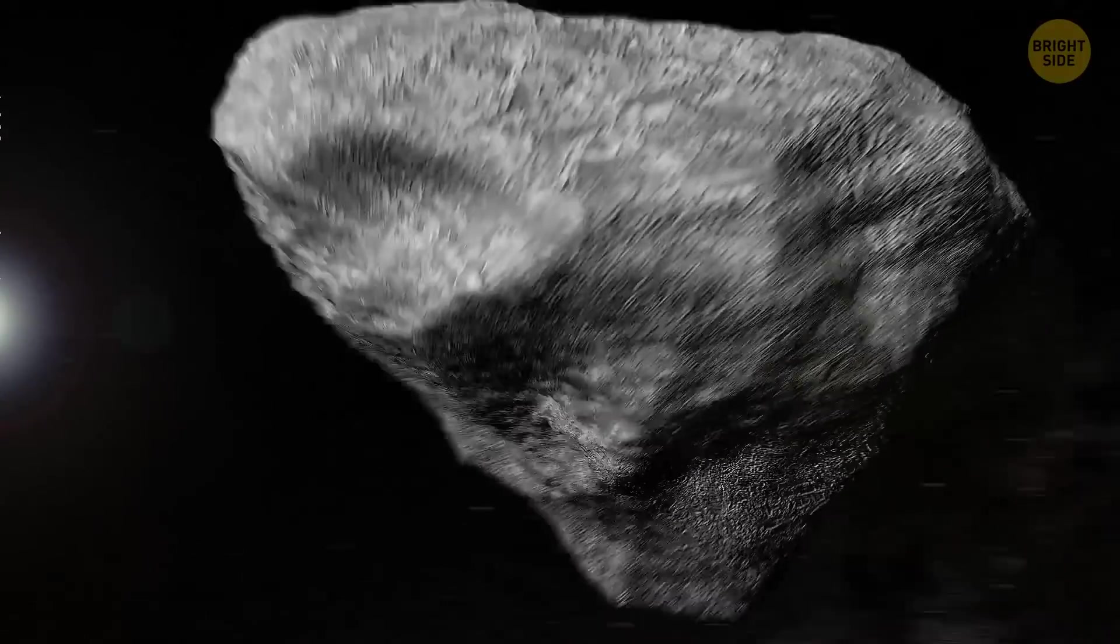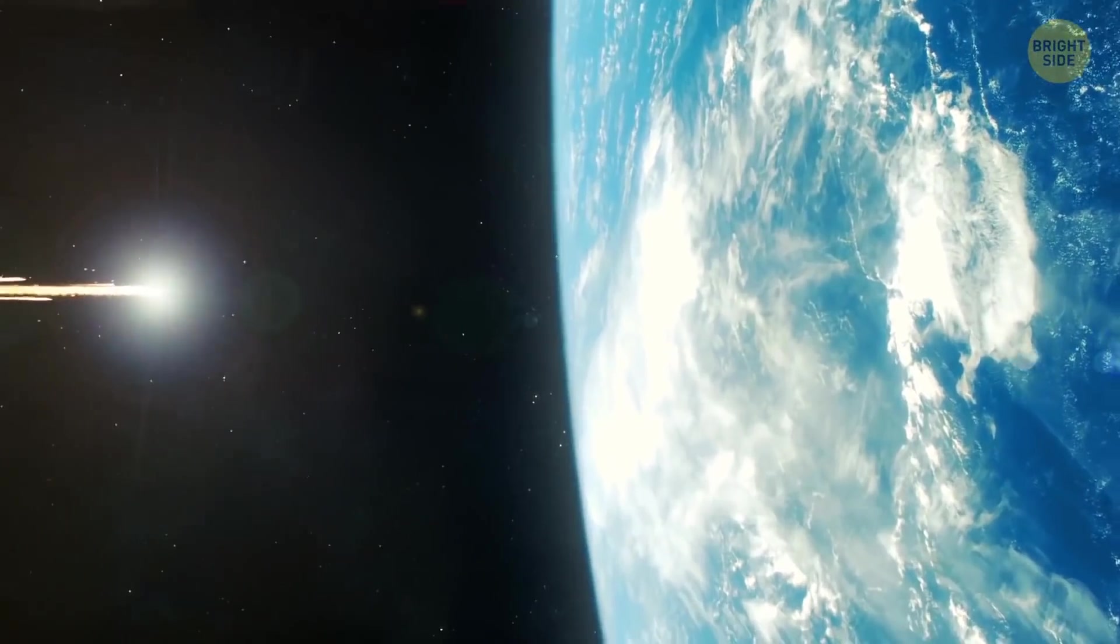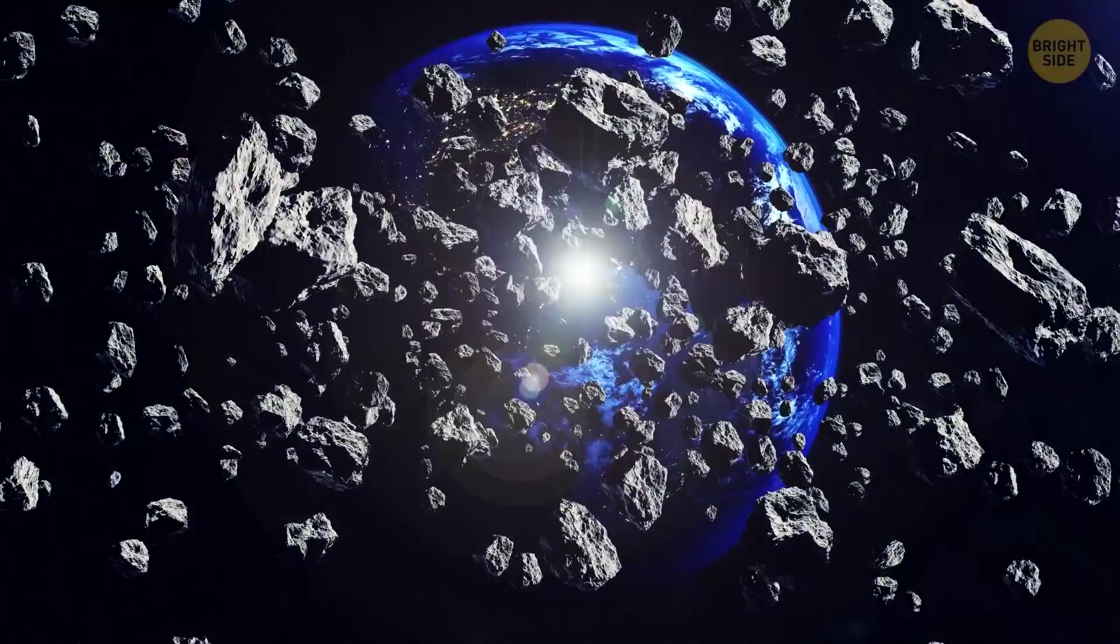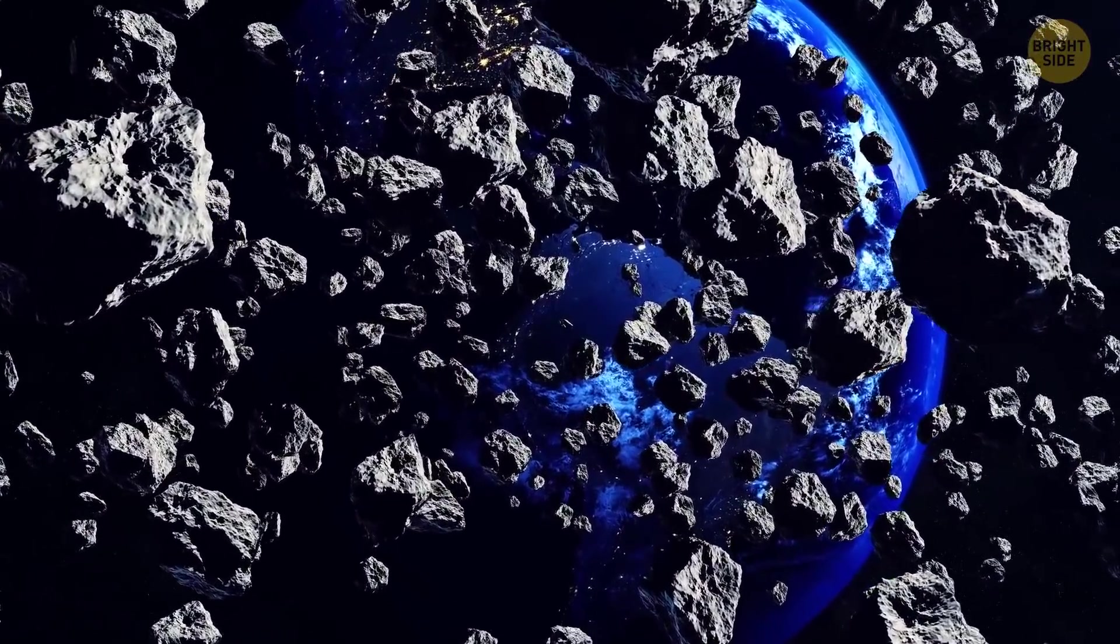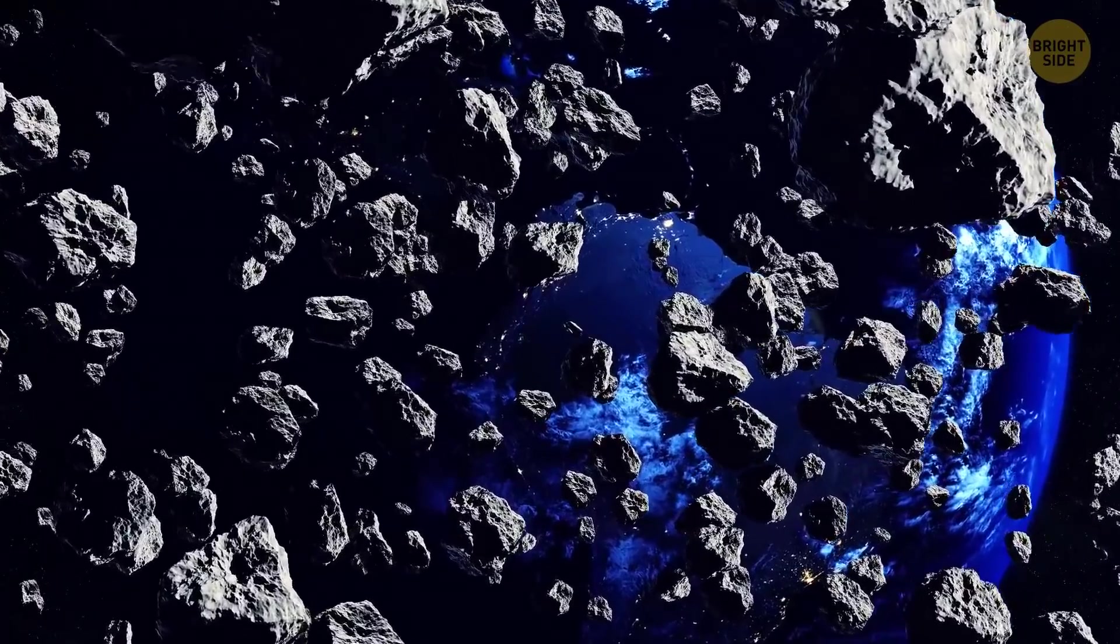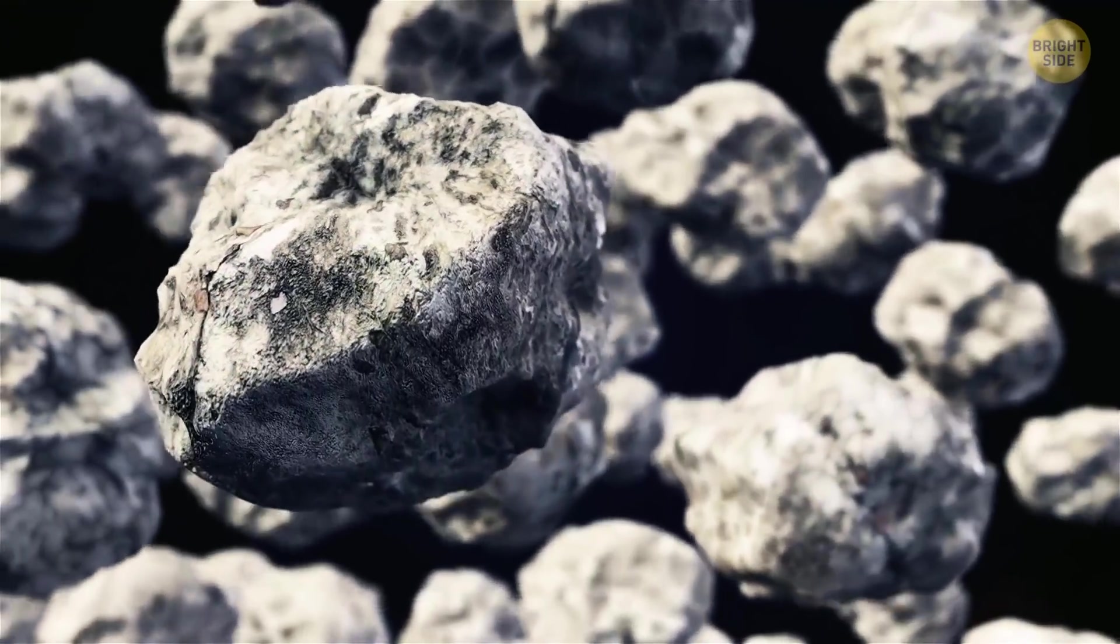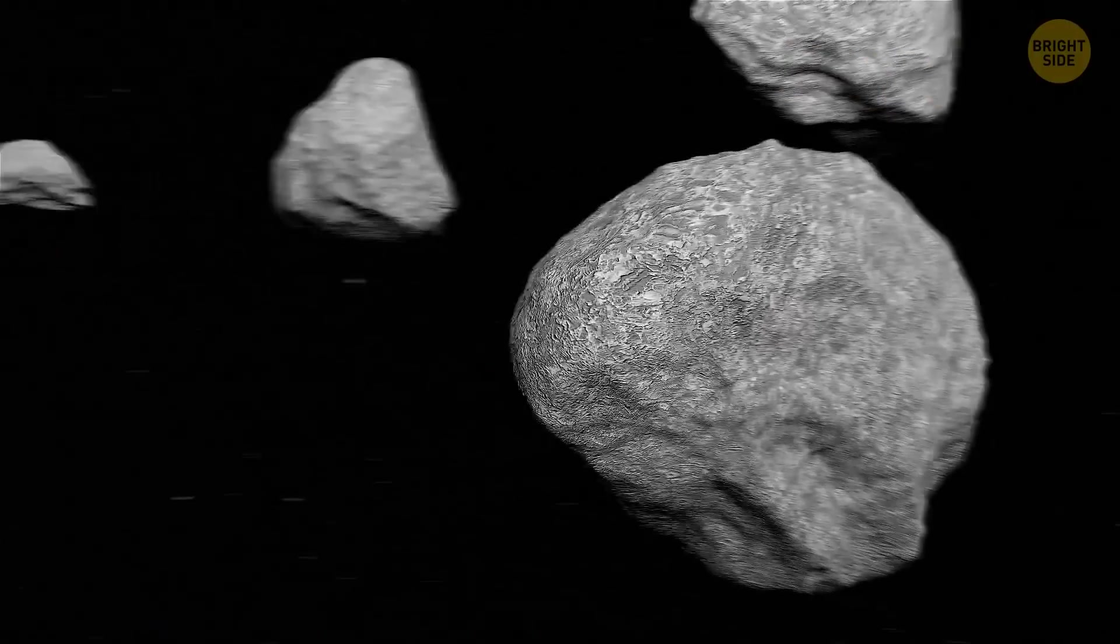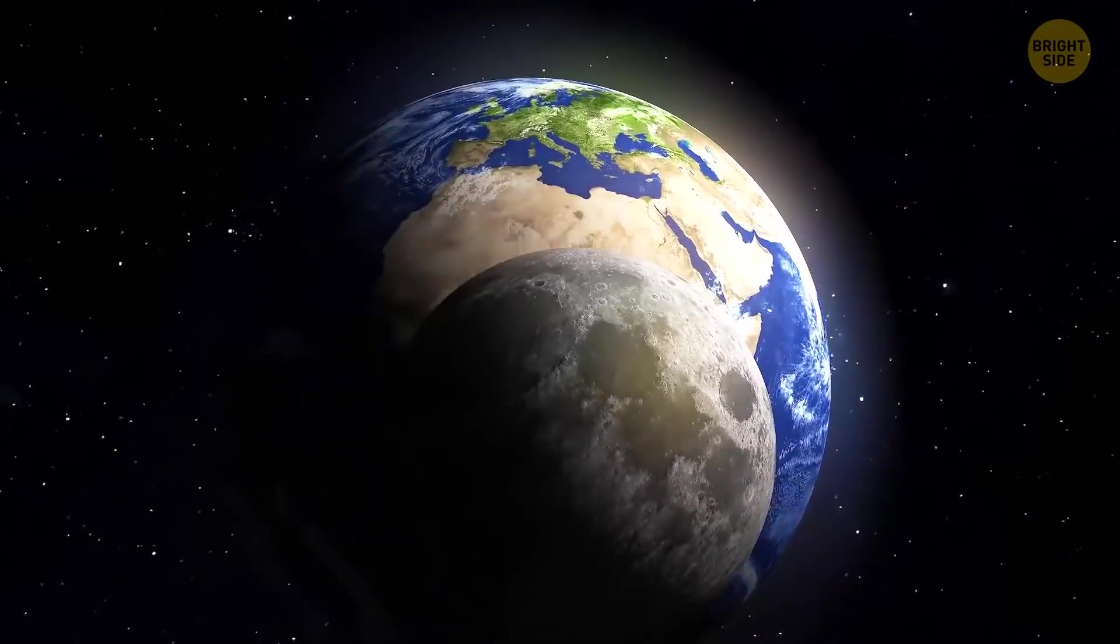While we're on this topic, the moon has long been believed to have formed as a result of a humongous impact with the Earth. A Mars-sized celestial body could have driven itself into our planet and made part of its crust shatter. The resulting debris then packed together in a tight ball, which later became our moon.